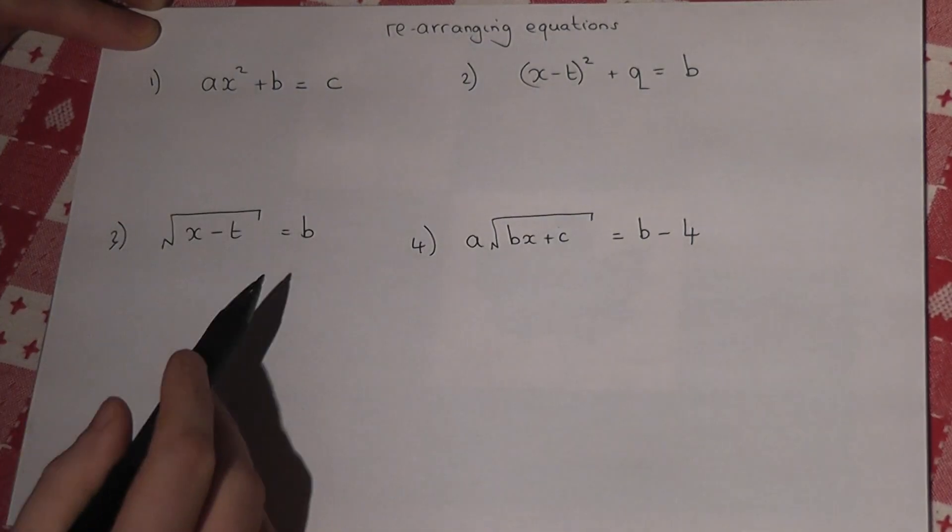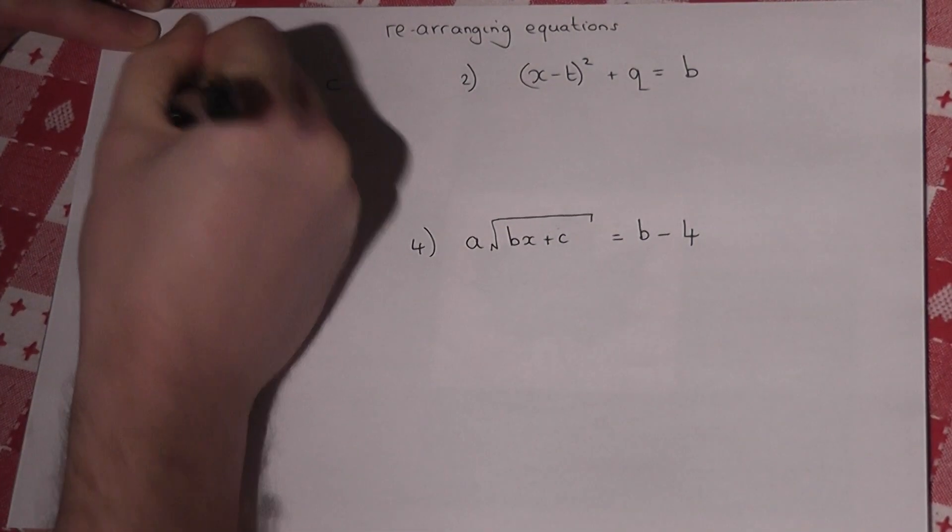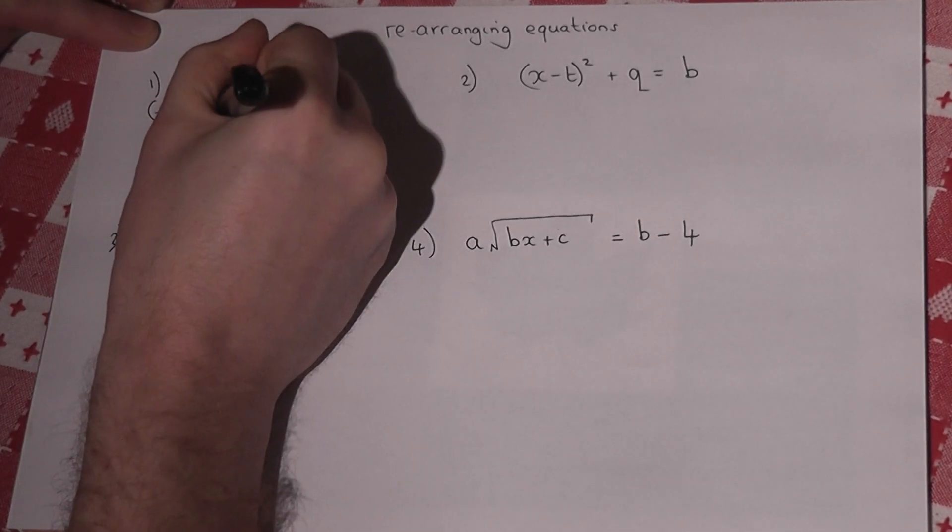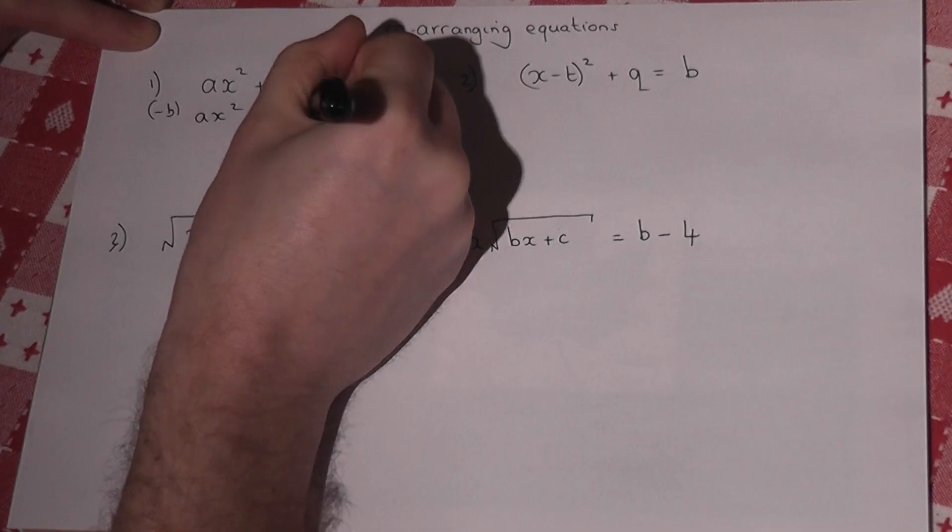So on the first one, I'd take away b to begin with, to give this x squared term by itself. So ax squared equals c, take away b.